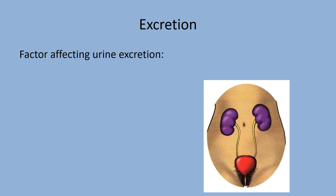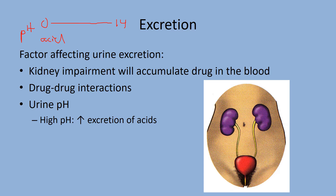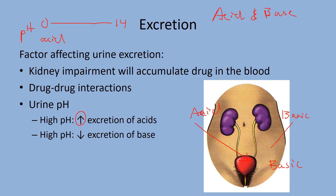Urine pH affects drug excretion. If urine pH is high (basic), acidic drugs in the blood will be attracted into the urine and eliminated more quickly — increased excretion of acid drugs. Conversely, basic drugs in the blood will repel the basic urine environment and stay in the system longer, decreasing their excretion.